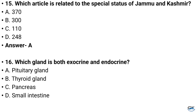Question number 16. Which gland is both Exocrine and Endocrine? Option A: Pituitary gland, Option B: Thyroid gland, Option C: Pancreas, Option D: Small Intestine. And the answer is Option C: Pancreas.